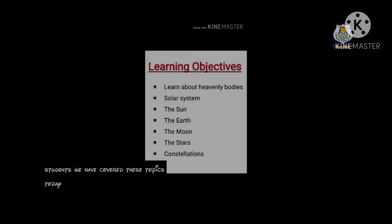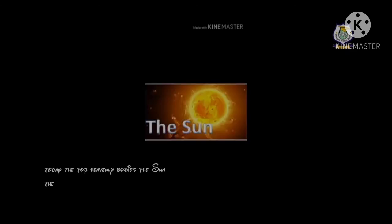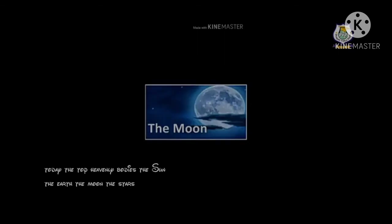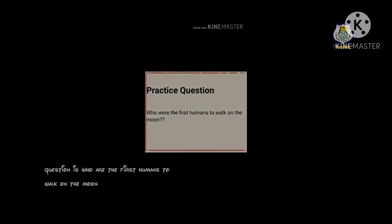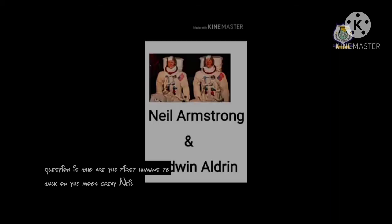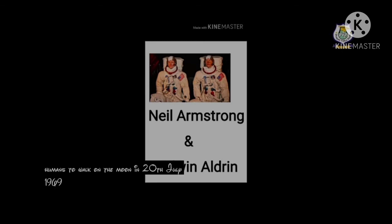We have covered these topics in today's session: heavenly bodies, the sun, the earth, the moon, the stars, and constellations. Now some questions: How many planets are there in our solar system? There are eight planets. Who were the first humans to walk on the moon? They were Neil Armstrong and Edwin Aldrin. Which is the brightest star that can be seen from the earth? That is Sirius. Thank you, you have understood the topic.